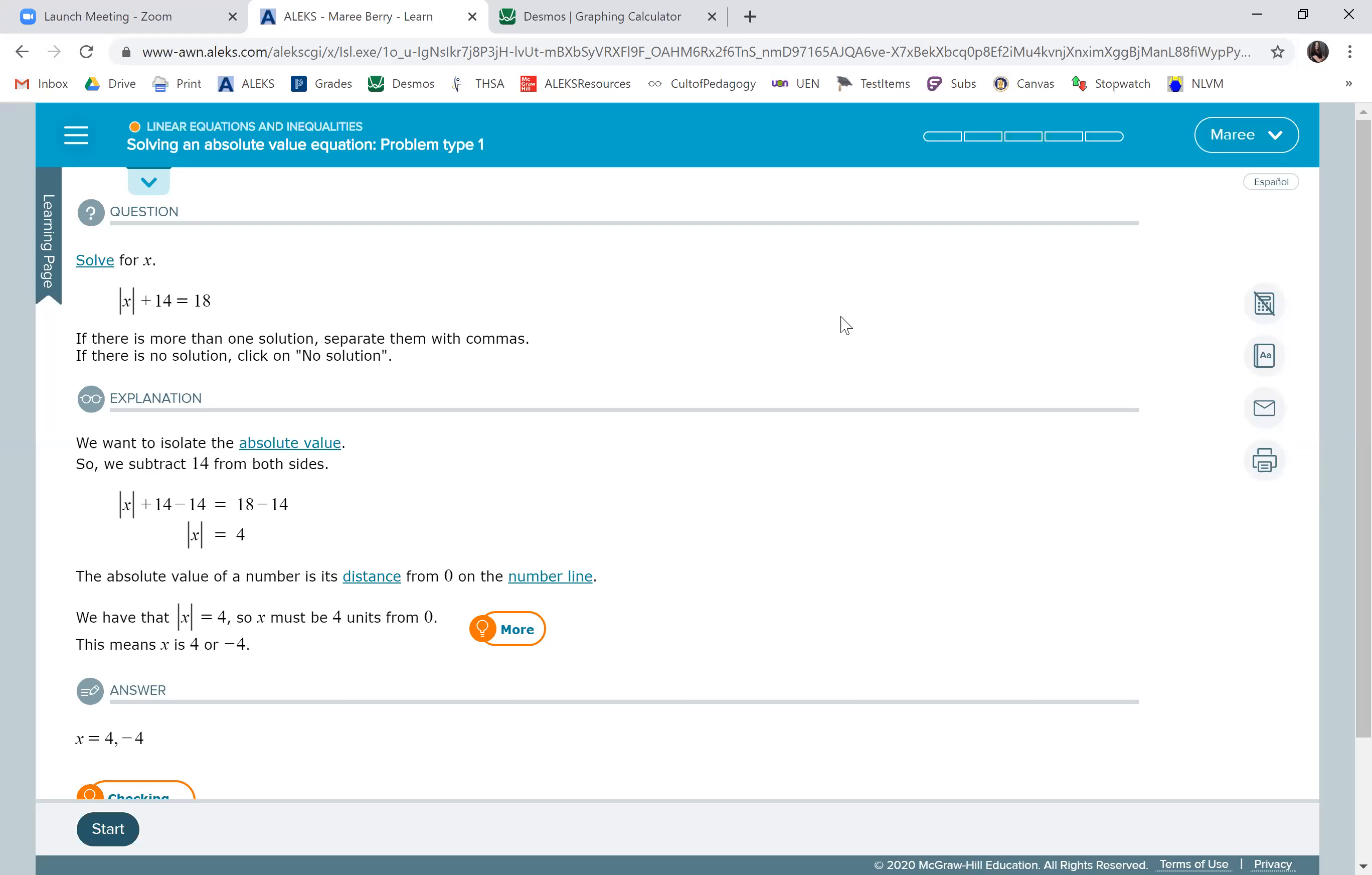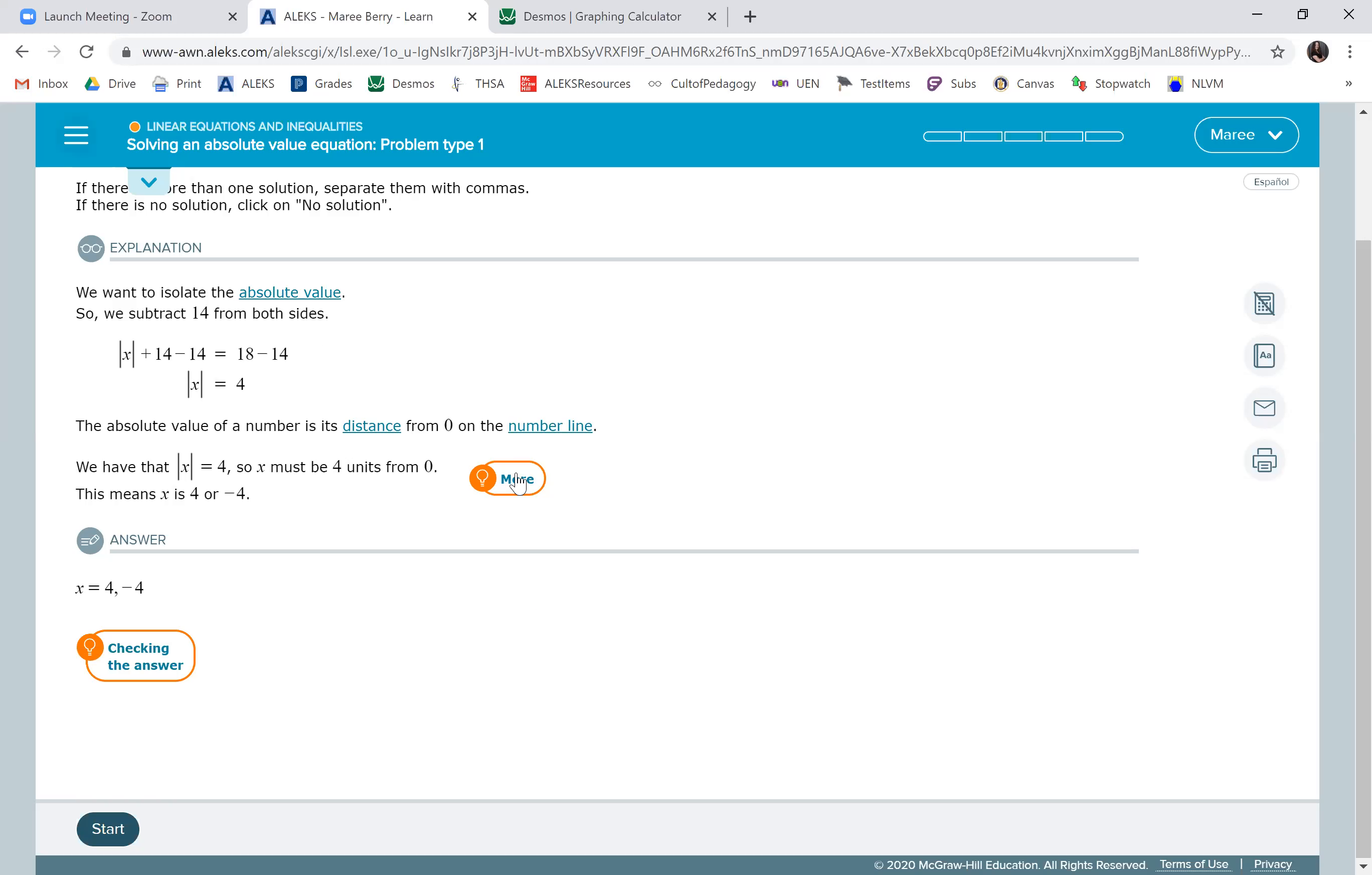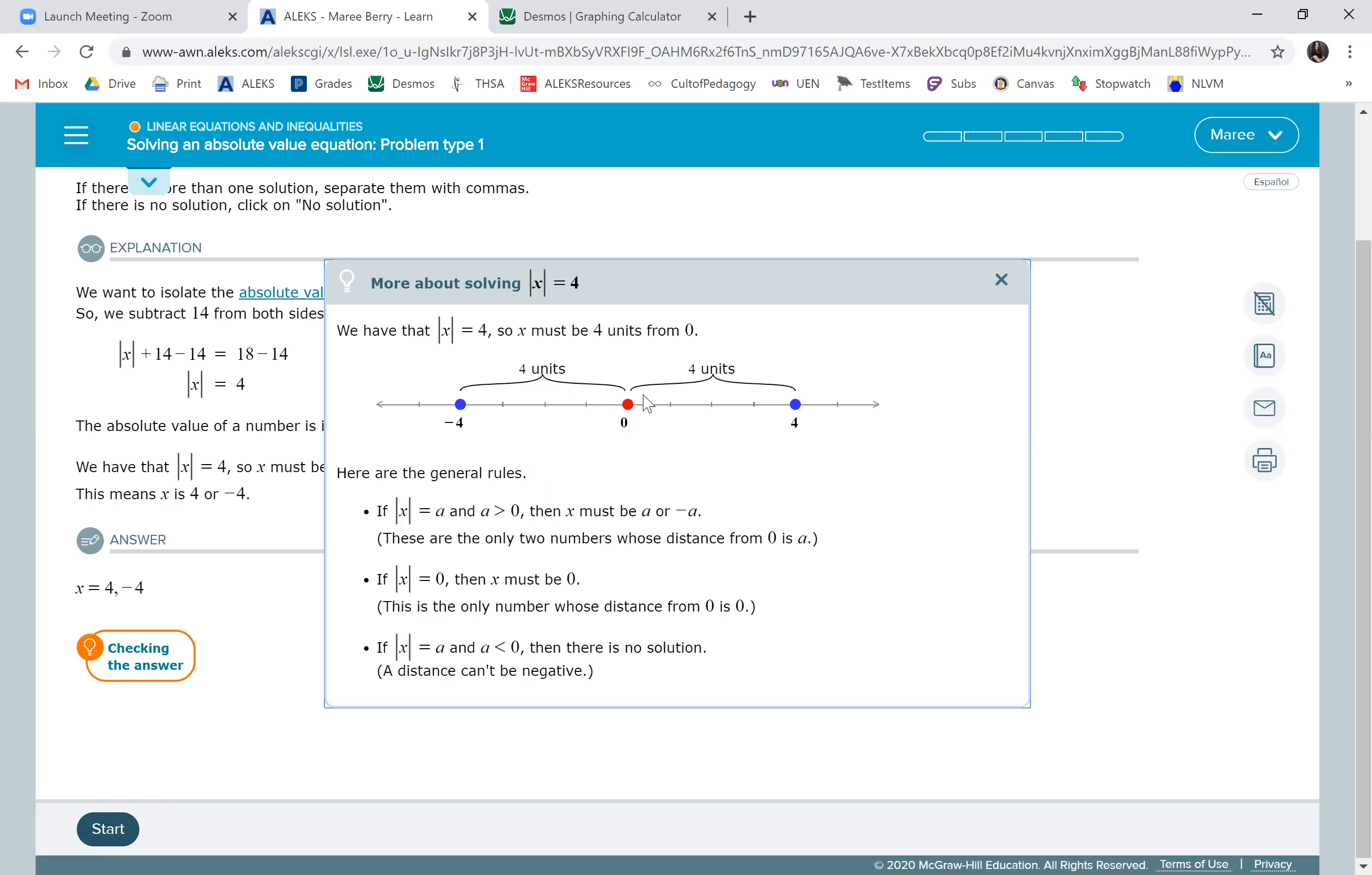Okay, in this topic, we're doing a really simple solving an absolute value equation. You want to get the absolute value all by itself, just like when you're solving for a variable. So because in this example, they were adding 14, we want to subtract 14. Once we have the absolute value by itself, we look for two numbers that are four units away from zero.